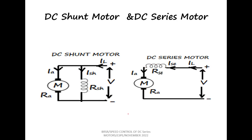In both cases, the speed can be controlled by changing the supply voltage, by changing the field current, or by changing the armature current. In the case of a series motor, the armature current and the field current are the same because these two are connected in series.